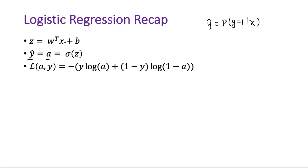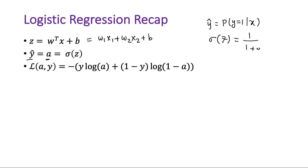We call y-hat 'a' for activation, and it is the sigmoid function of z. Here x is itself a vector of different features x1, x2, x3, and so on, with corresponding weights and a bias term. For a simple example with just two features, z equals w1*x1 plus w2*x2 plus b. Sigmoid is defined as 1 over (1 plus e raised to the power minus z). Finally, we define the loss function in terms of estimated y and actual y.